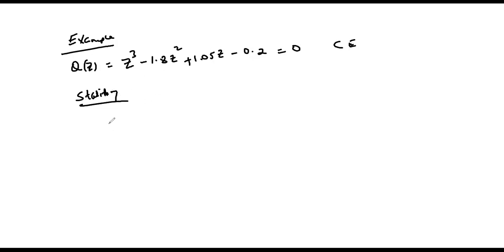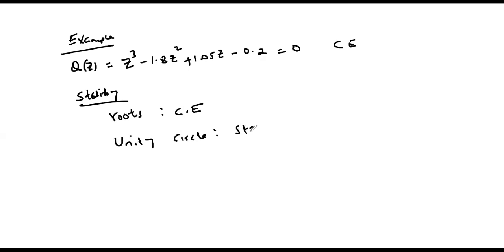To determine the stability of the discrete system, we determine the roots of the characteristic equation. If all the roots fall within a unit circle, then the system is said to be stable. To determine the roots, we solve for z given z cubed minus 1.8 z squared plus 1.05 z minus 0.2 equals zero. We will use MATLAB to obtain the solution.